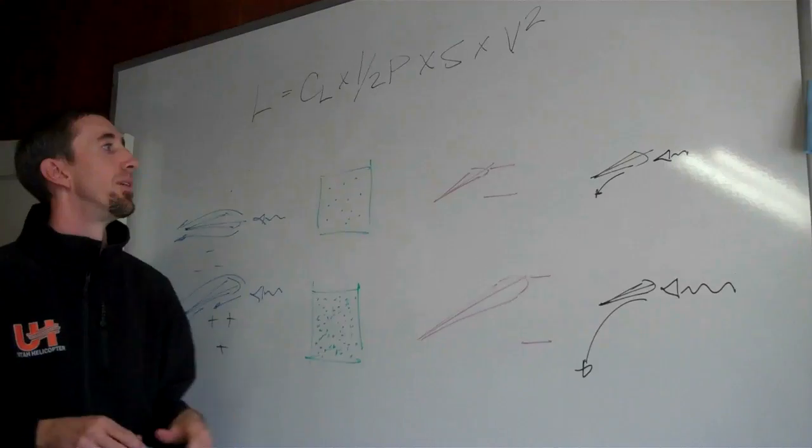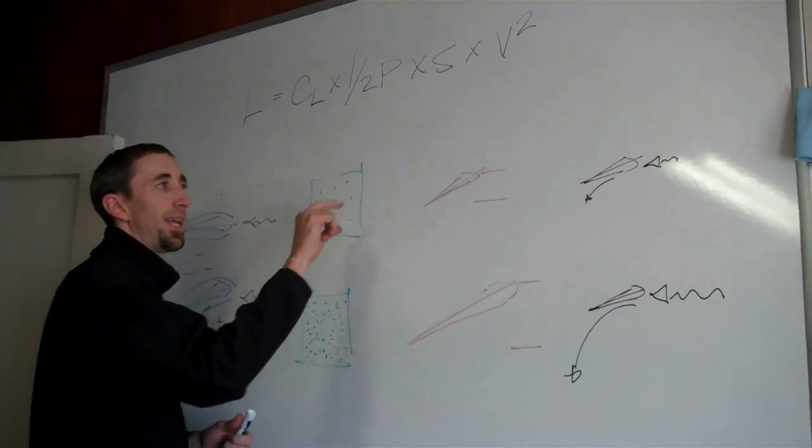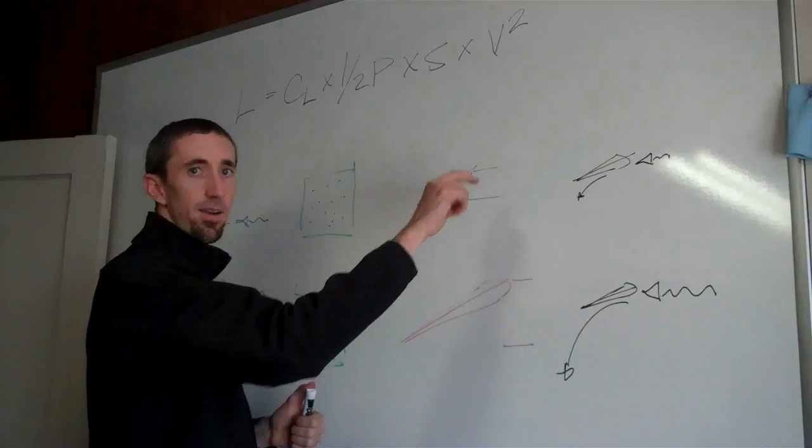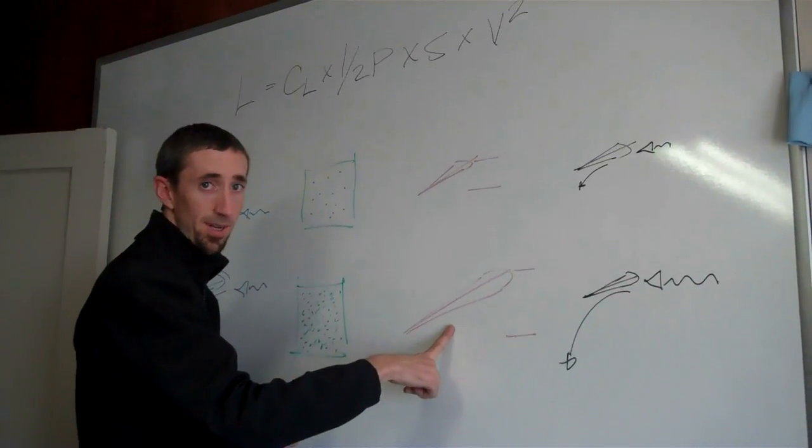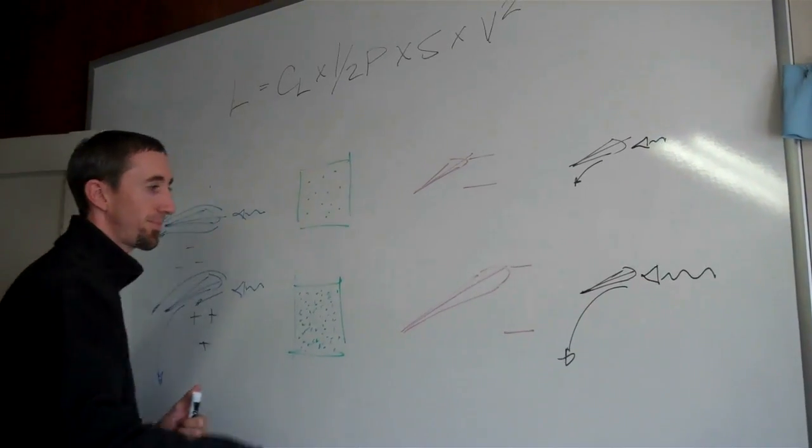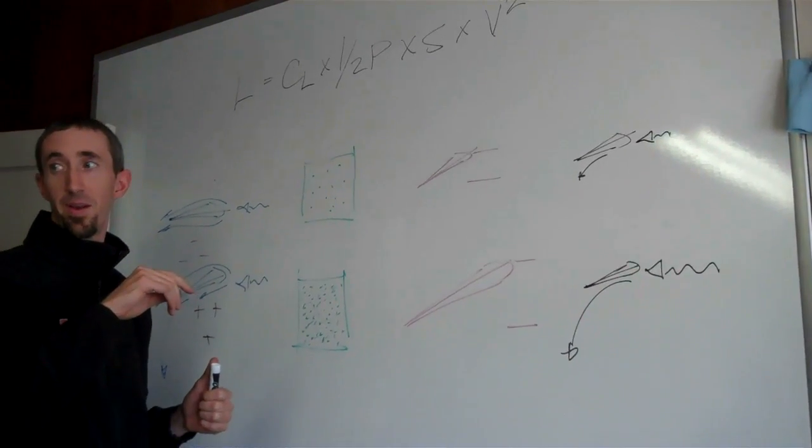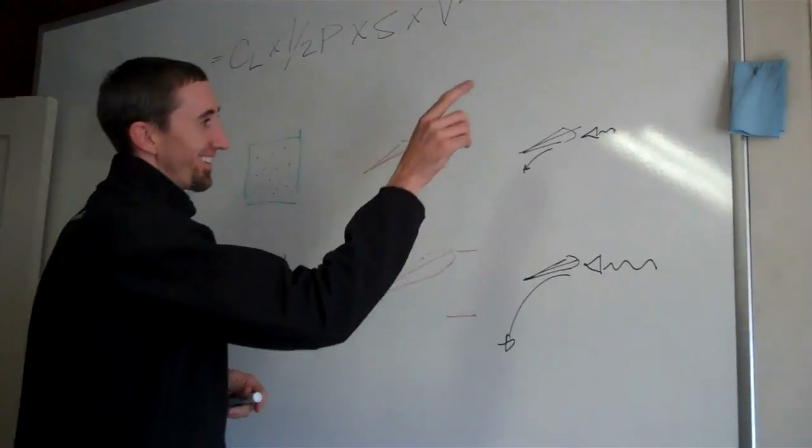Surface area. If you have little surface area, it's going to take a small bite out of the air to deflect the air down. If you have a lot of surface area, it's going to take a much bigger bite in order to make it happen. So bigger is better. Bigger is always better.